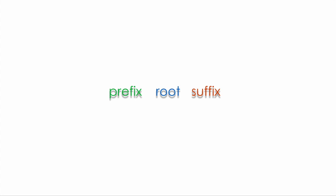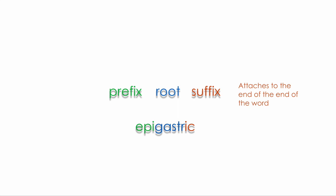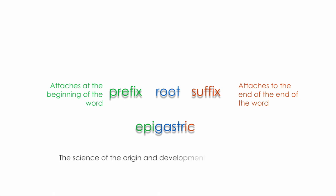The root can be attached to a prefix, a suffix, or both. In the word 'epigastric,' for example, 'epi' is the prefix and 'ic' at the end is the suffix. The suffix attaches to the end of the word, and the prefix attaches to the beginning. The science of the origin and development of words is known as etymology.